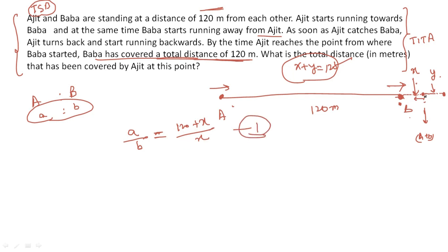I got one relation. Another relation I got is that when Baba covers y, Ajit also covers x. So a upon b is also x upon y. This is my second relation. And one relation I got from above, which is my third one.